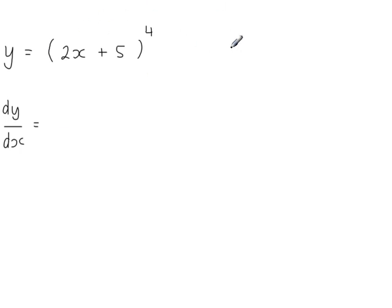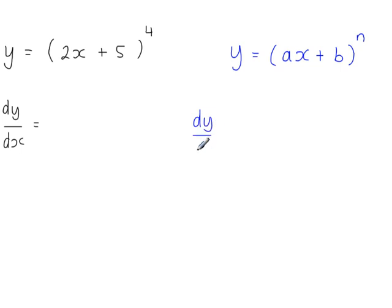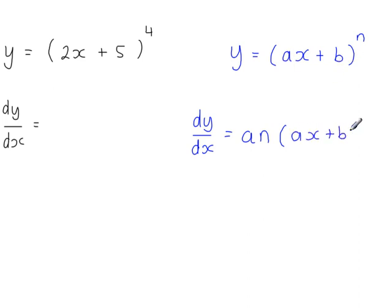This is quite a standard problem because we have y equal to some linear function, so ax plus b, where a and b are constants, a is the coefficient of x, and all of this raised to a power n. Then dy/dx is equal to the coefficient of x multiplied by the power, so a times n, times the inside function ax plus b raised to the power of n minus 1.